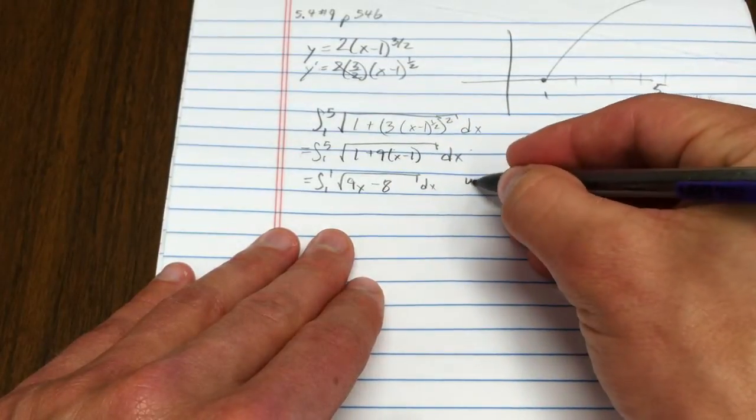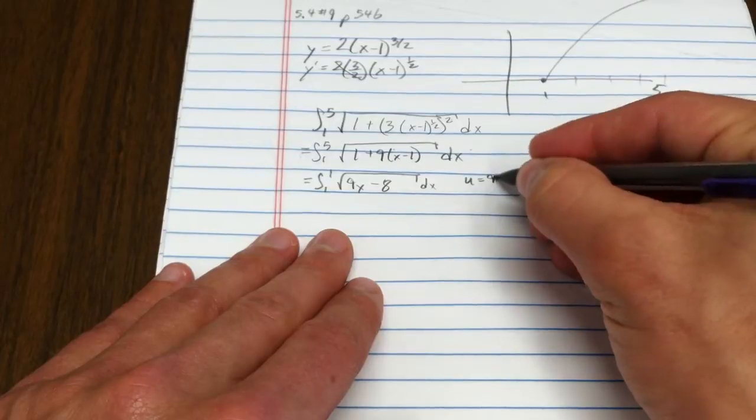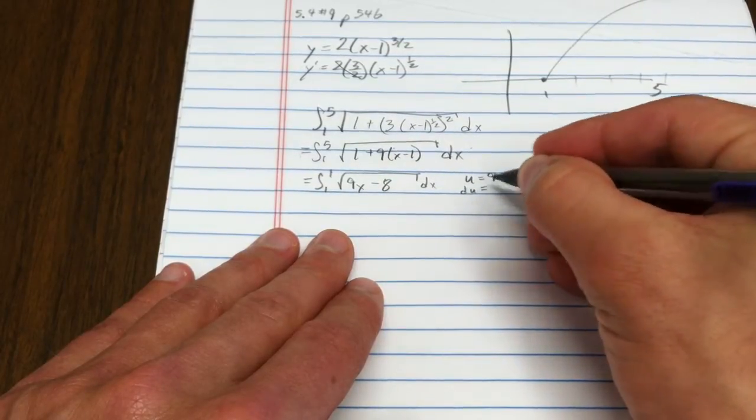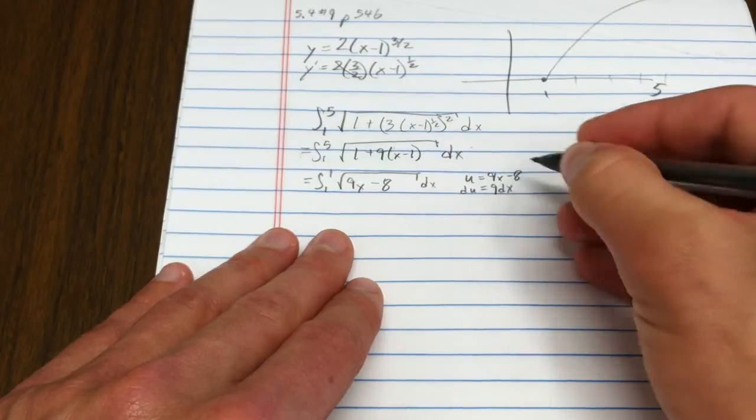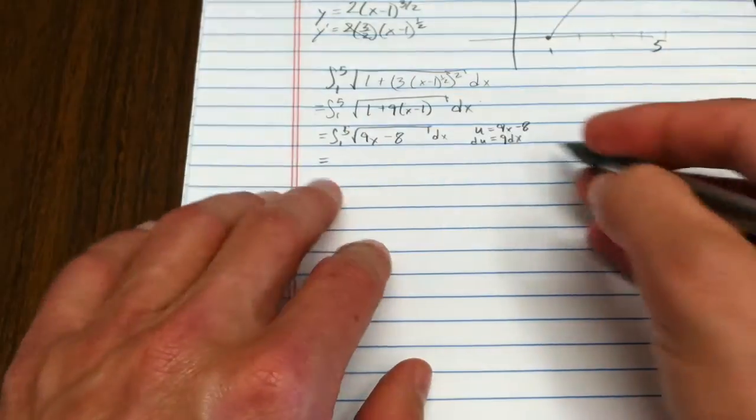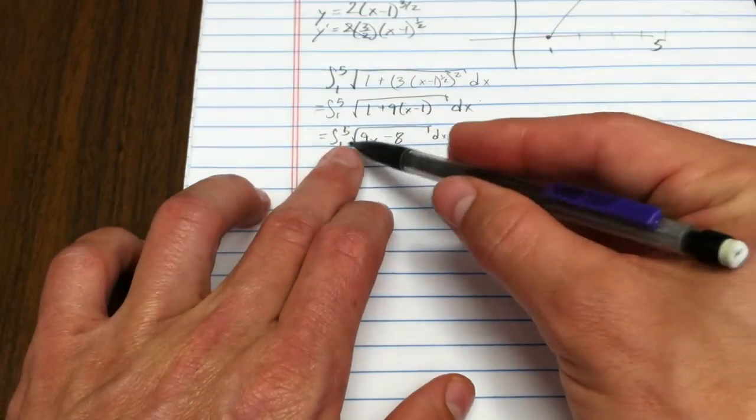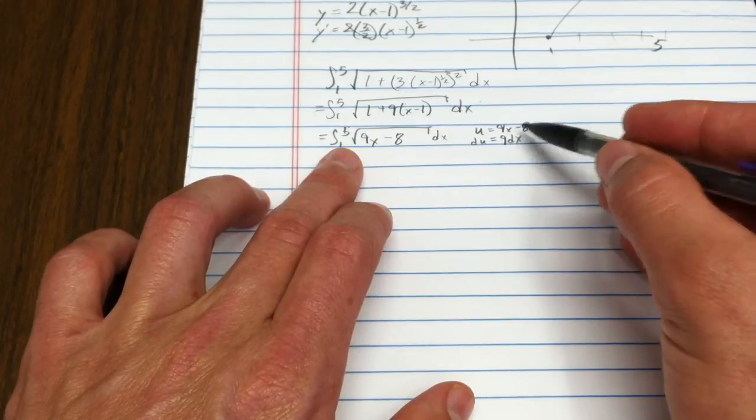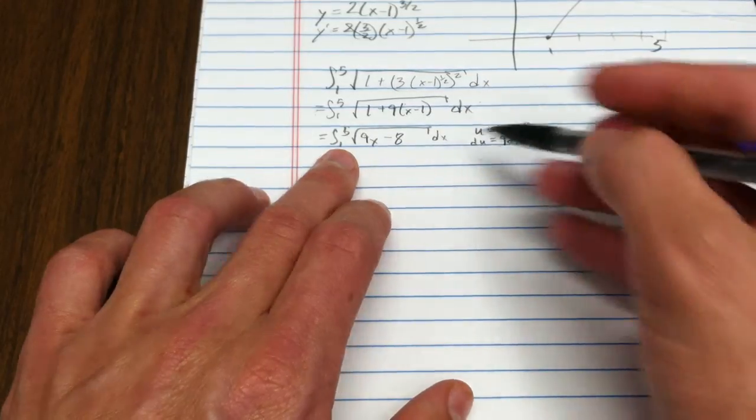We could do a substitution here: u equals 9x - 8. If I'm going from 1 to 5 in terms of x, when x is 1, u would also be 1, because 9 times 1 minus 8 is 1.